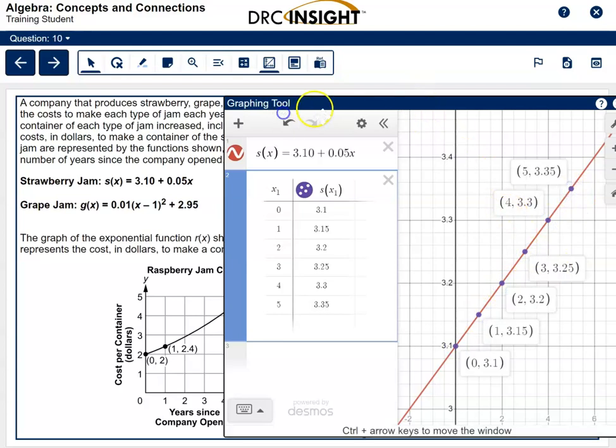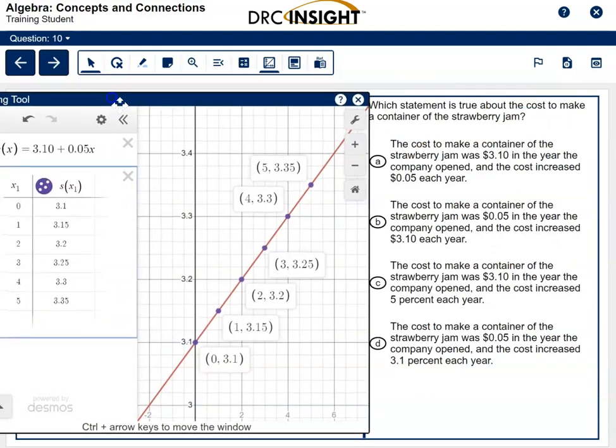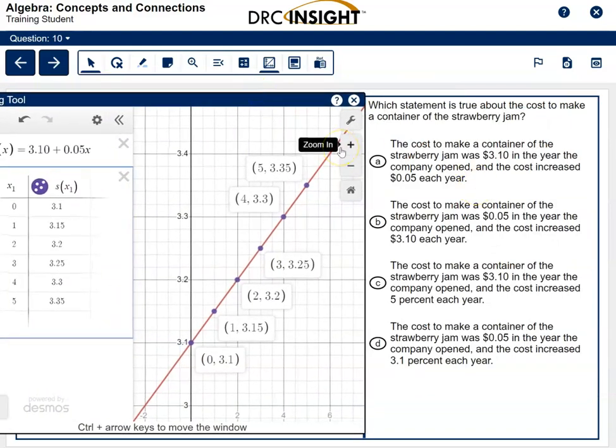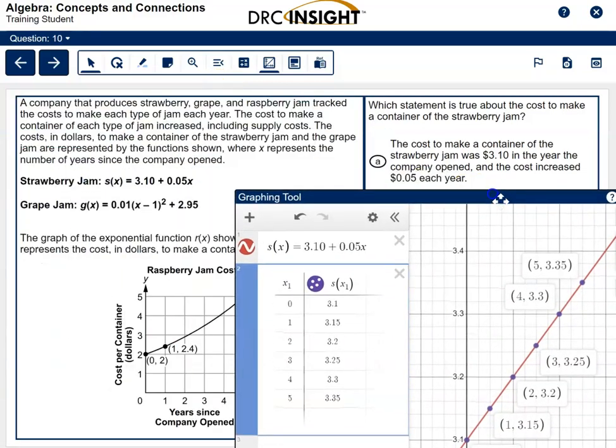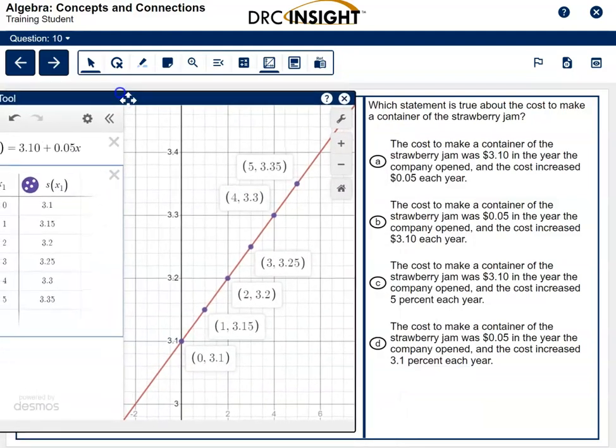Let's see which of these answer choices makes sense. I'm going to pull this over and check which one works. It says the cost to make a container of strawberry was $3.10 in the year the company opened. I think that sounds right because it says X is the number of years since the company opened. That works. This one does have 0 and 3.1, which is the same as $3.10.